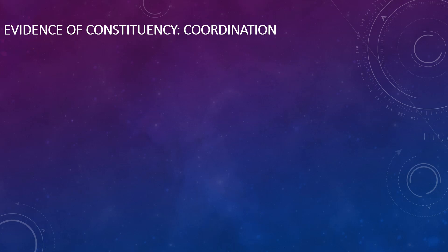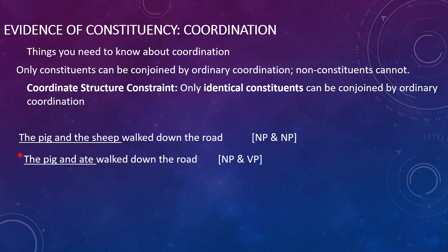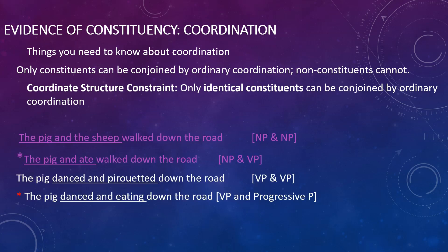Evidence of constituency using coordination. Coordination is the construction where there's an 'and' — 'x and y,' 'Jack and Jill,' 'paint and brush,' etc. One interesting thing about coordination is that it will only link together constituents of the same type. For example, you can say 'the pig and the sheep walked down the road' — that's a noun phrase and a noun phrase. However, you can't coordinate a verb and a noun. Similarly, 'the pig danced and pirouetted down the road' coordinates two verb phrases. It would be very odd to take a noun and a verb and coordinate those.